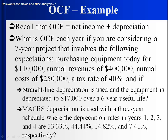We want to know what the operating cash flow is each year for a 7-year project — years 0 through 7. We're going to purchase equipment today for $110,000. Annual revenues of $400,000, annual costs of $250,000, tax rate of 40%. First we'll look at the case where we have straight-line depreciation. Equipment is depreciated to $17,000 over a 6-year useful life.